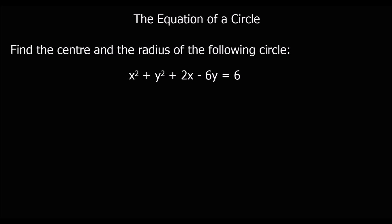This one says find the centre and the radius of the following circle, but it is not in the correct form — not in the form x minus a squared plus y minus b squared equals r squared. So what we have to do is put it into the right form. Firstly, I'm going to gather my x's together: x squared and 2x.